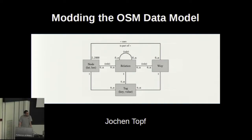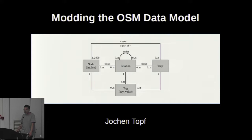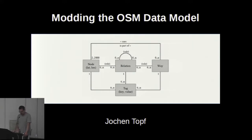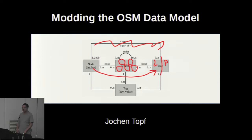I've been working, and all of you have been working, with this data model for a very long time. I created that graph for the book that we wrote — like 10 years ago — and we still have that data model and I want to change it. I want to scribble over it and do changes. After 10 years we have a lot of experience with what we are doing and what we want to do with OSM data, and I think it's time to allow us to think about this.